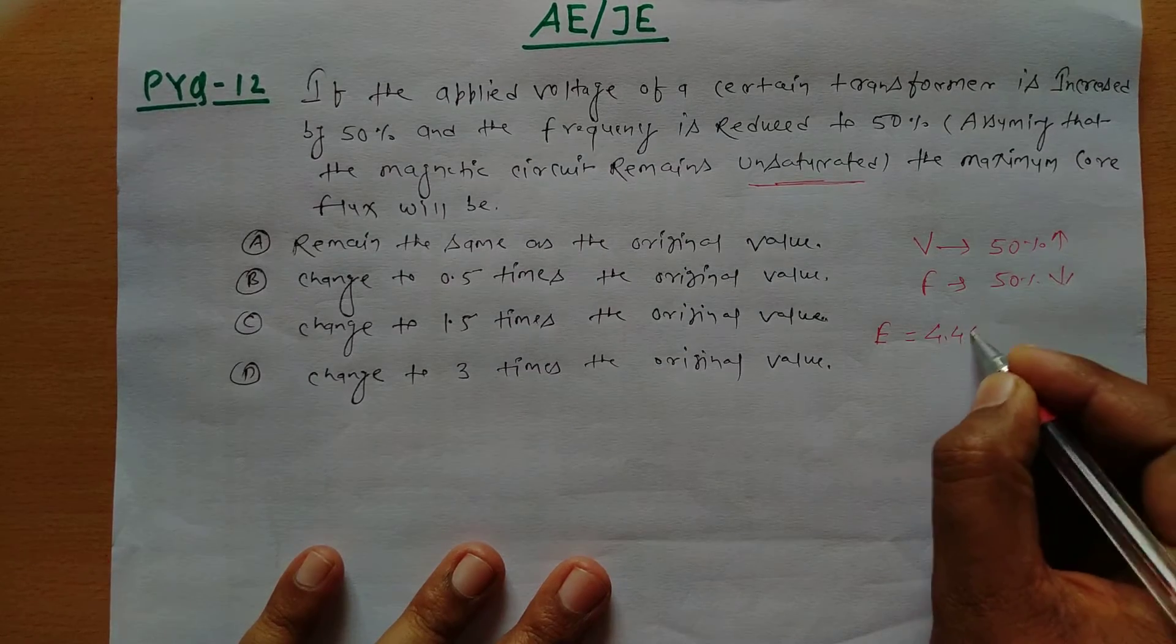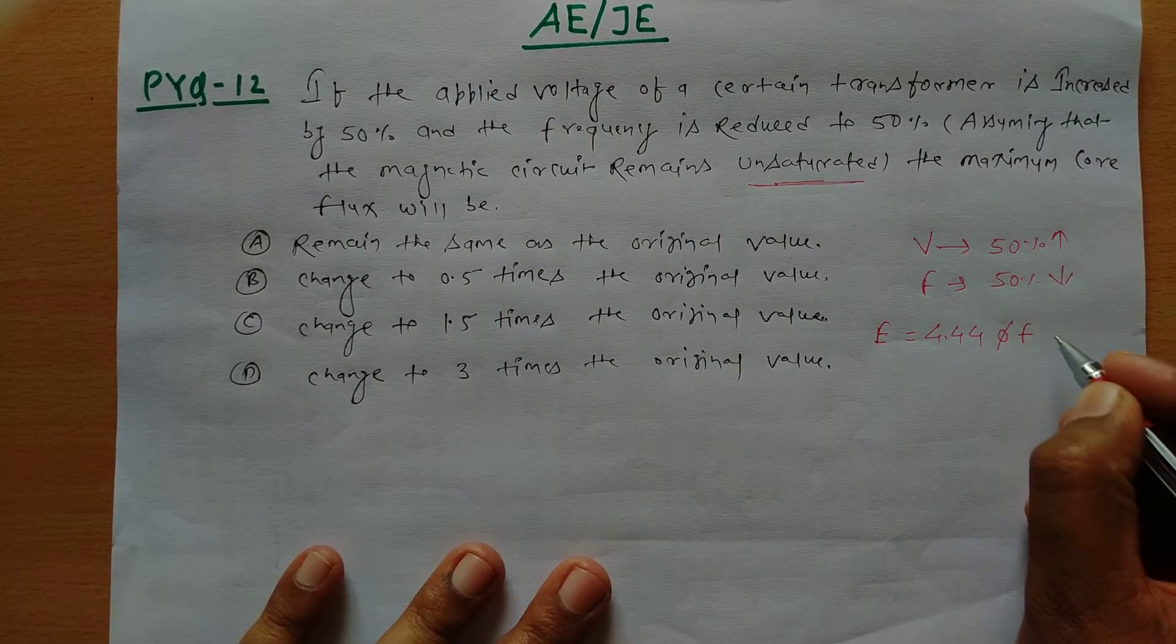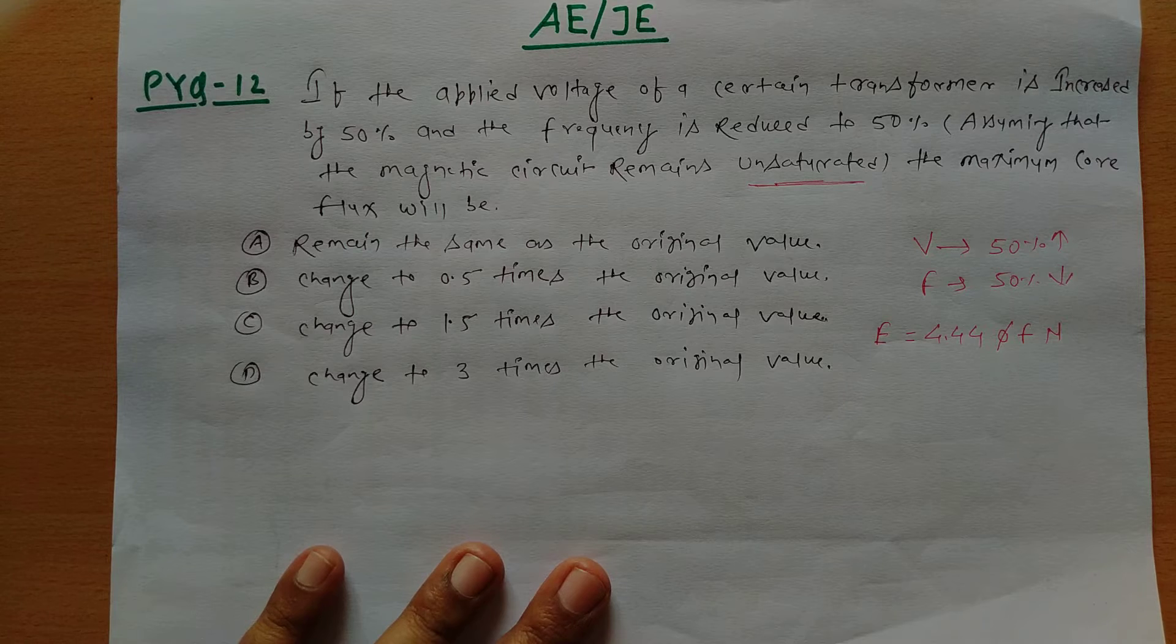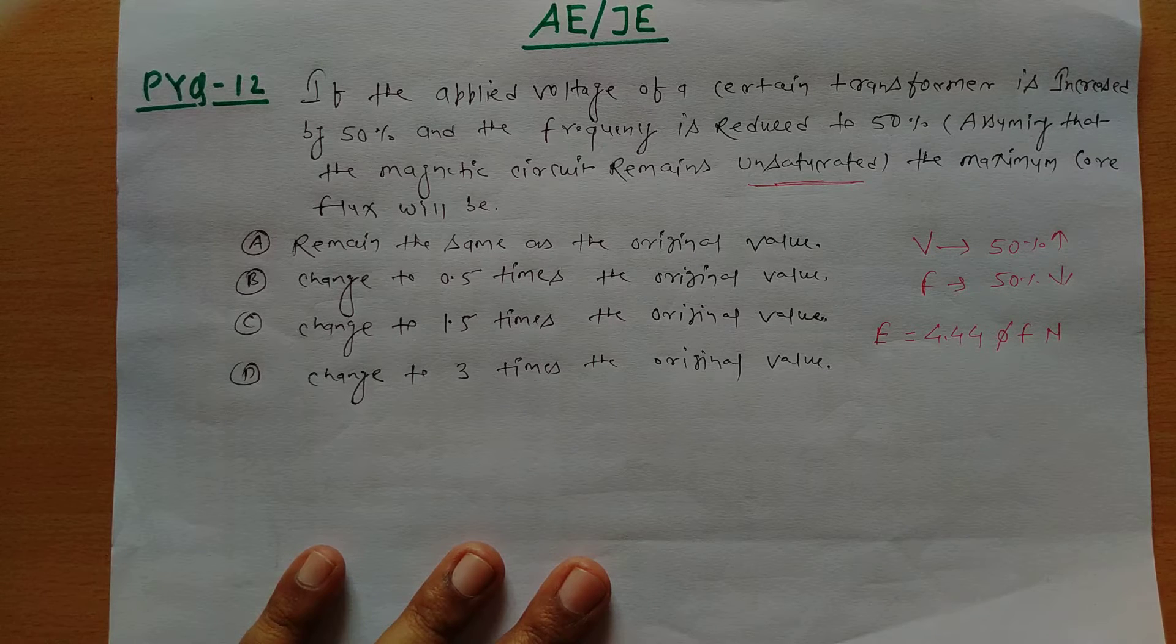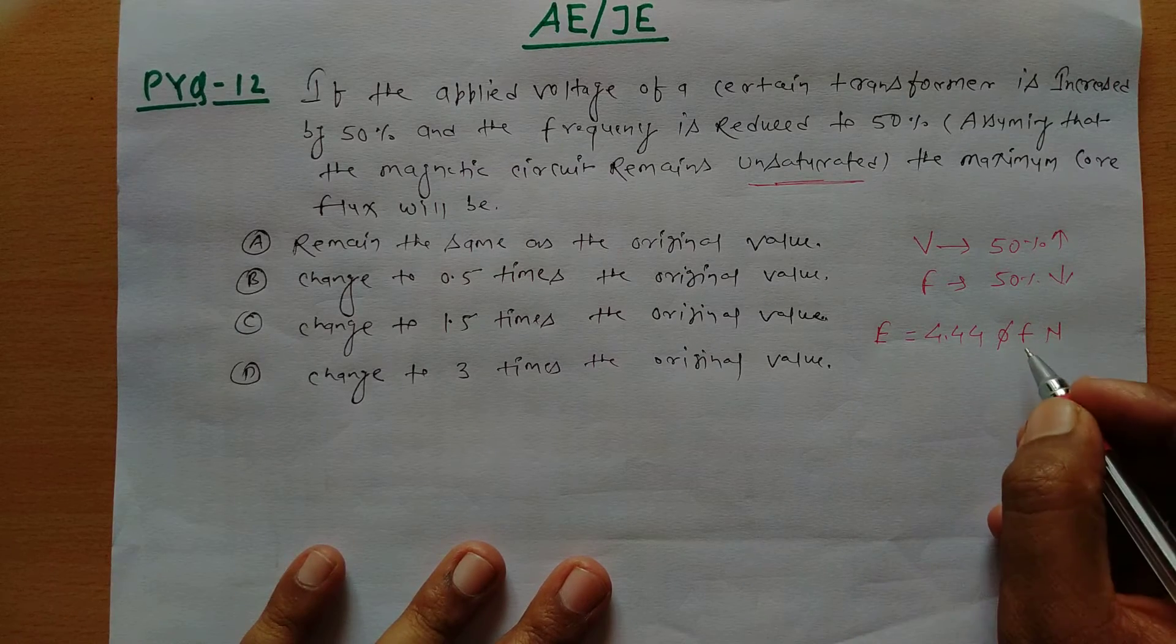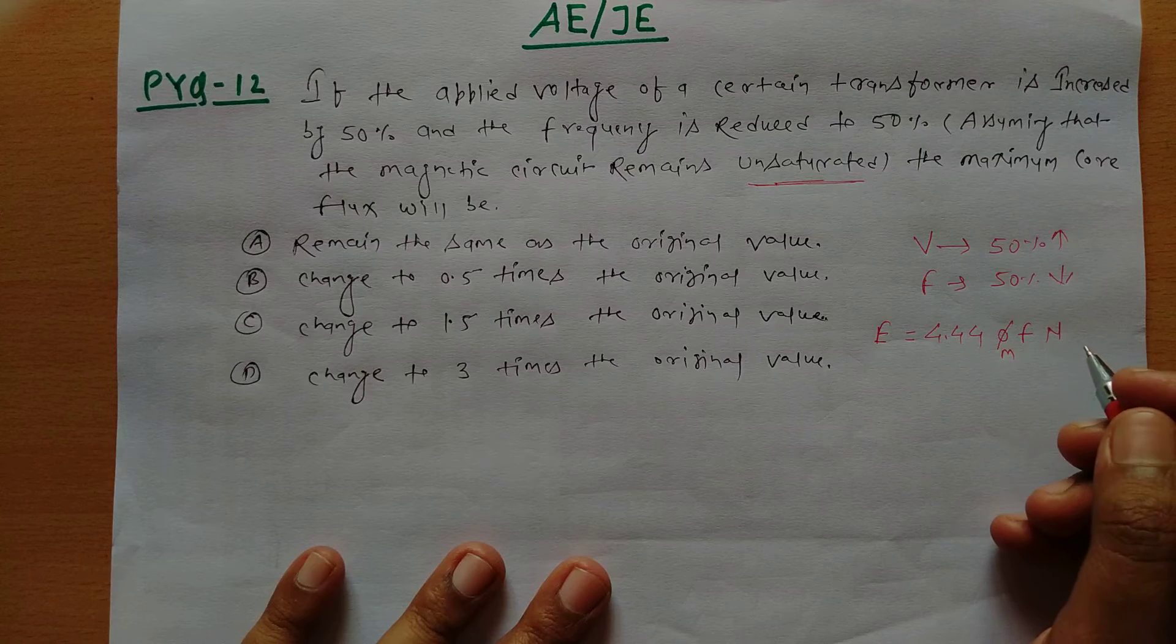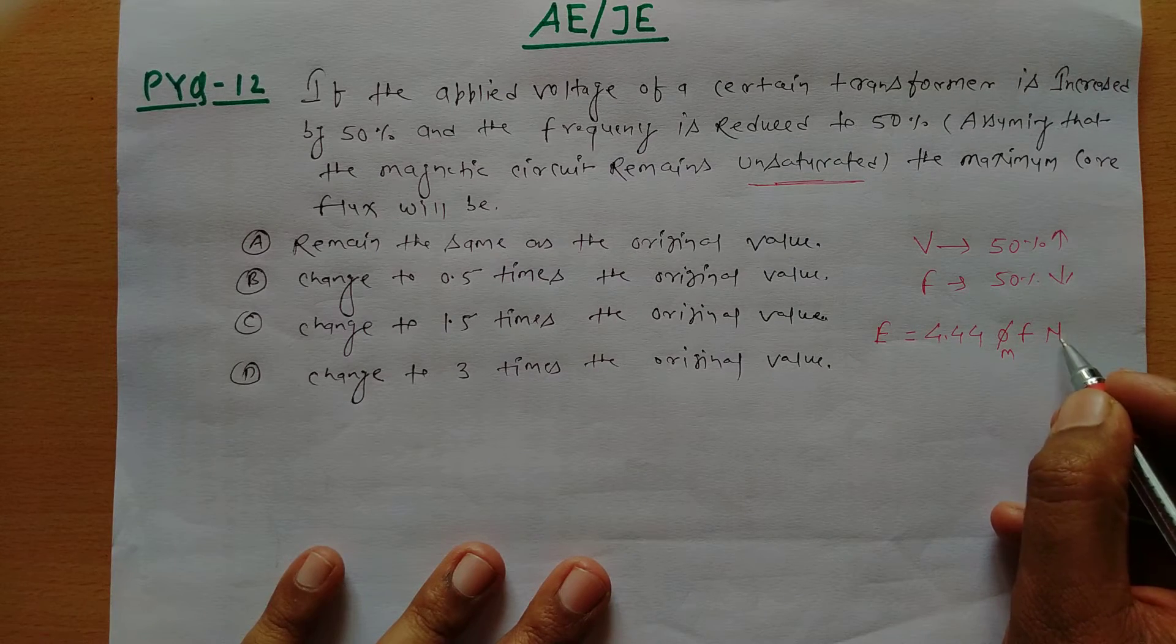E equals, it will be given as 4.44 times flux times frequency times number of turns. So here I can define you that the induced EMF will be the RMS quantity, and this φ is the maximum value, the maximum core flux there, frequency, and this is the number of turns.